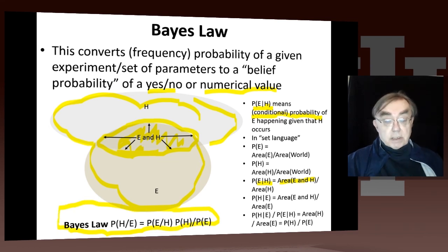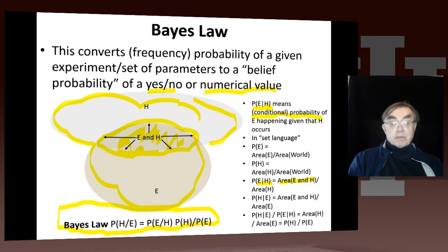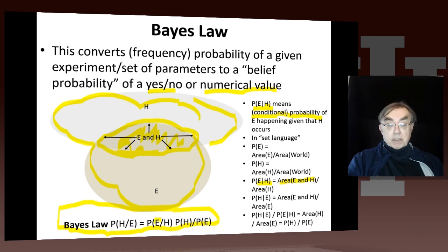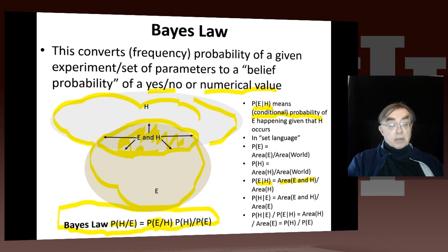This is absolutely critical. The frequency model tells us the probability of observation E given that the Higgs particle exists — H. That's what we measure. But what we really want is the probability of H given E — the probability associated with the Higgs existing or not, or the Higgs mass being a certain value, based on our experiment. Bayes' law converts the frequency interpretation of probability into the belief interpretation of probability.